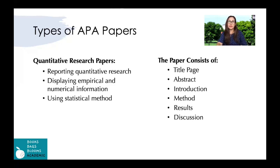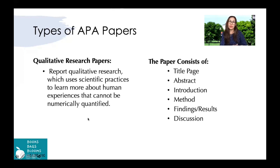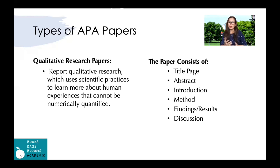The next type is qualitative research papers, which report qualitative research using scientific practices to learn more about human experiences that cannot be numerically displayed or quantified. These papers don't use numbers. The paper consists of a title page, abstract, introduction, method, and findings or results and discussion.